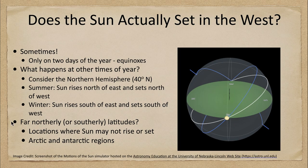Does the Sun always set in the west and rise in the east? Well, the answer is: sometimes. On two days of the year — the equinoxes — that would be the vernal equinox in the spring and the autumnal equinox in the fall.